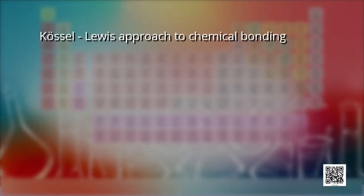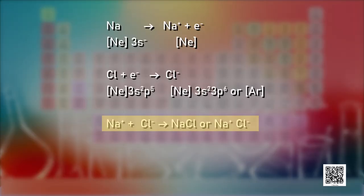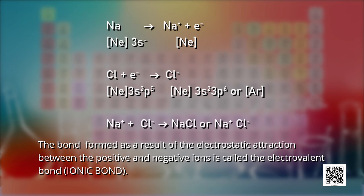Let's begin with the Kossel-Lewis approach to chemical bonding. You have learnt about formation of NaCl from sodium and chlorine. A bond is formed as a result of electrostatic attraction between positive and negative ions. This bond is called the electrovalent bond, that is, ionic bond.